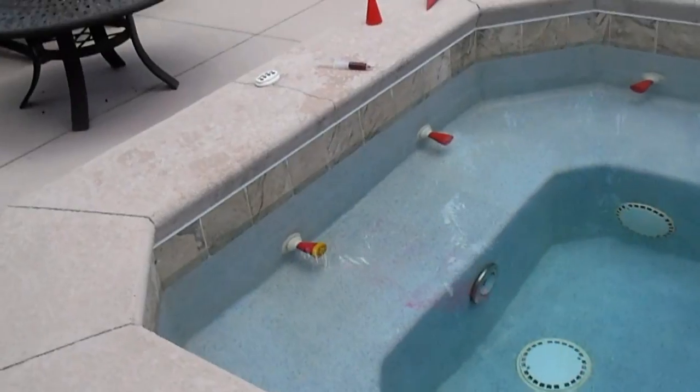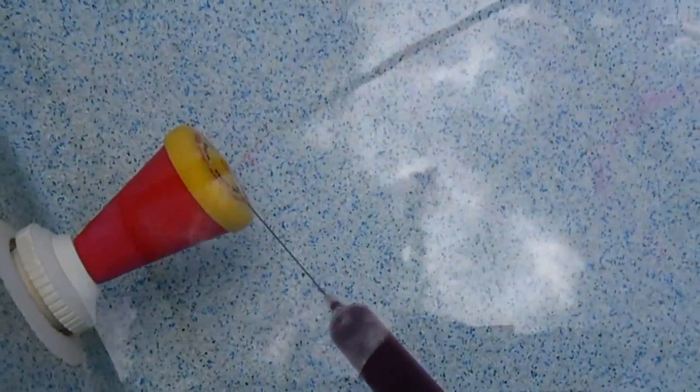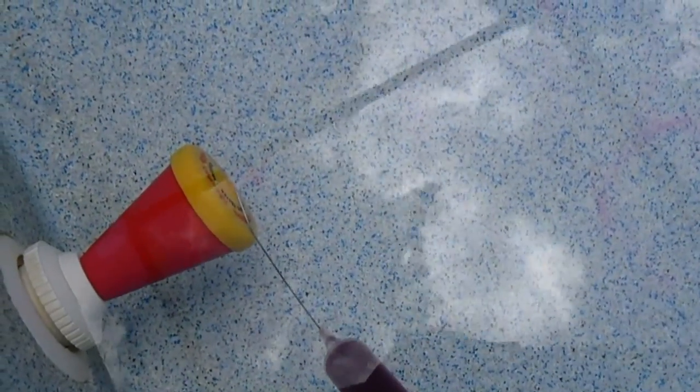So we showed you what a leak looks like with the cones. What if the plumbing system is not leaking? Well, the dye will just hang there, or breathe in and out, depending on the wave action of the body of water.